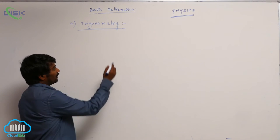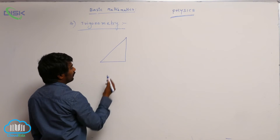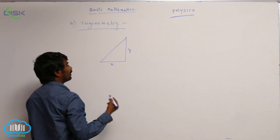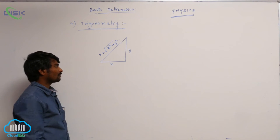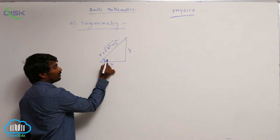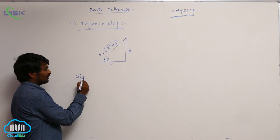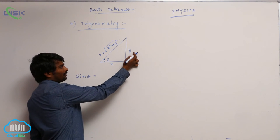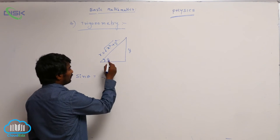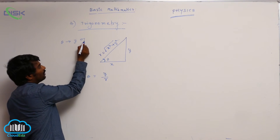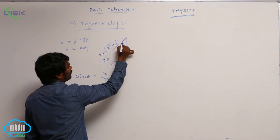Trigonometry basics. Let us take one right-angled triangle of side lengths x, y, and r, where x squared plus y squared equals r squared. Let me take this angle as theta. So let me define the trigonometric ratios: sin theta is equal to opposite side by hypotenuse, that means y by r. For theta, y is opposite and x is adjacent.